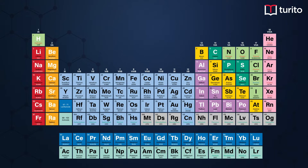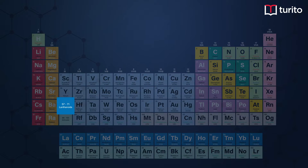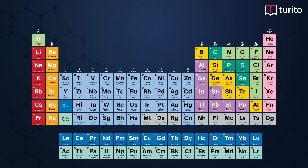Now, what else do we have to remember? We have to remember the third group, sixth period, because over here there are many elements involved in this particular group. The elements with atomic numbers 57 to 71 belong to the third group and sixth period. Next, the third group, seventh period contains atomic numbers 89 to 103. Remember all this.